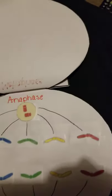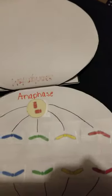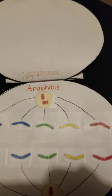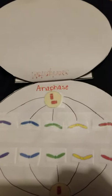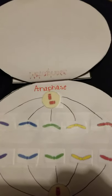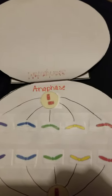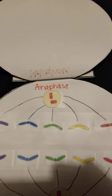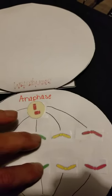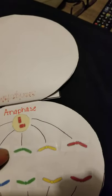Moving on to the next stage of mitosis, we have anaphase. During anaphase, the sister chromatids separate and begin moving toward opposite poles of the cell. You can see the separation of the chromatids, the centrioles, and the spindles.